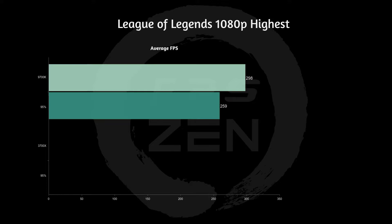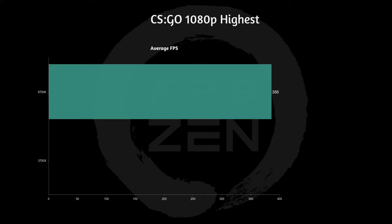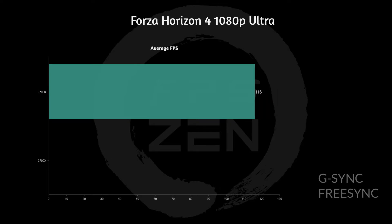In League of Legends at 1080p highest settings, the 9700k did 298 FPS — exceptional — with a 95th percentile low of 259 FPS. That's plenty of FPS and we don't need G-Sync or FreeSync, just a high refresh rate monitor. In CS:GO at 1080p highest settings, average FPS was an exceptional 386. Again, plenty of FPS — just a high refresh rate monitor is needed, G-Sync or FreeSync is not required.